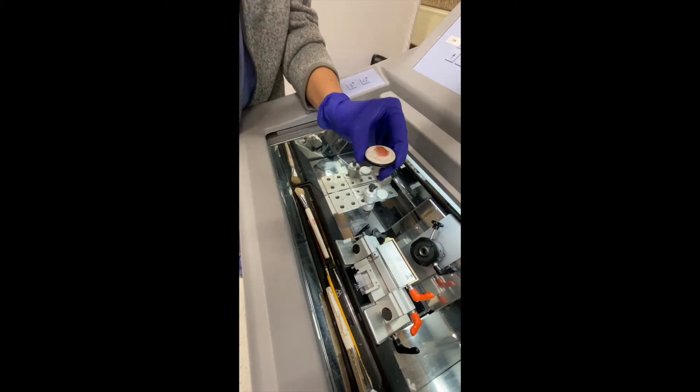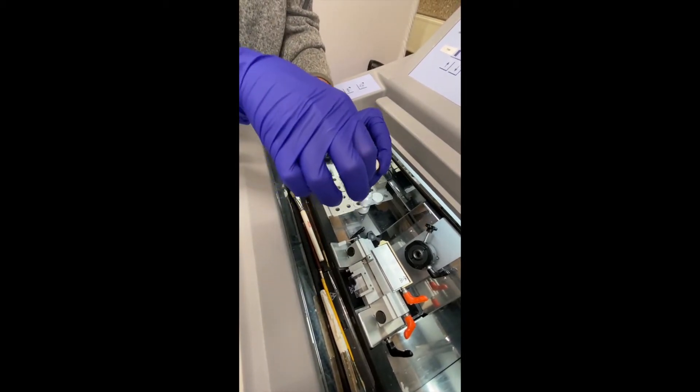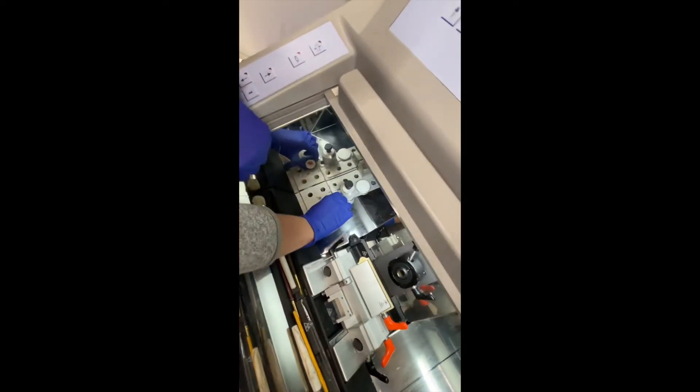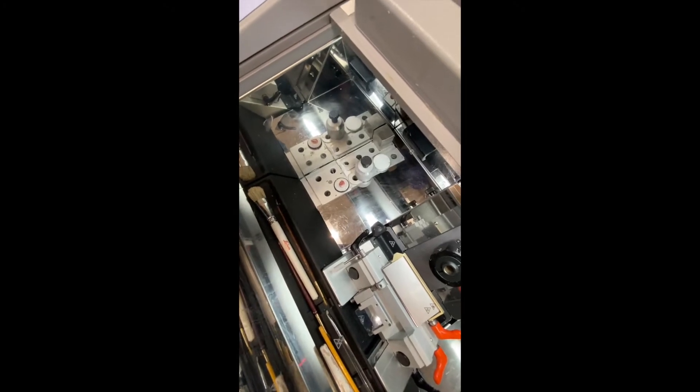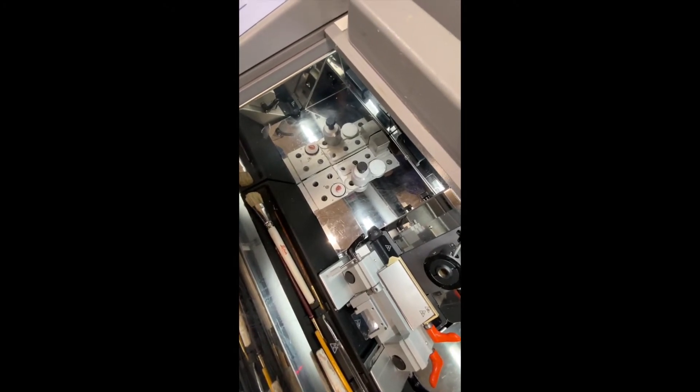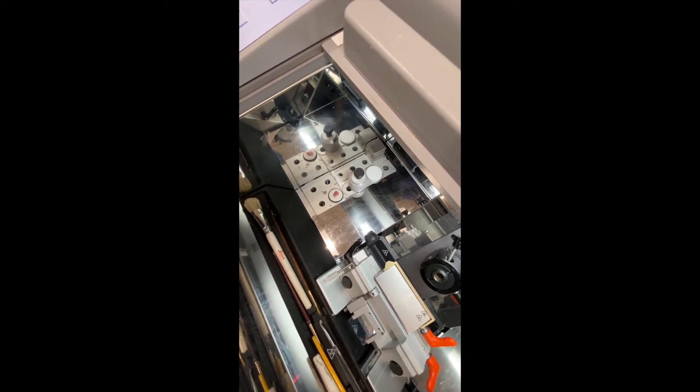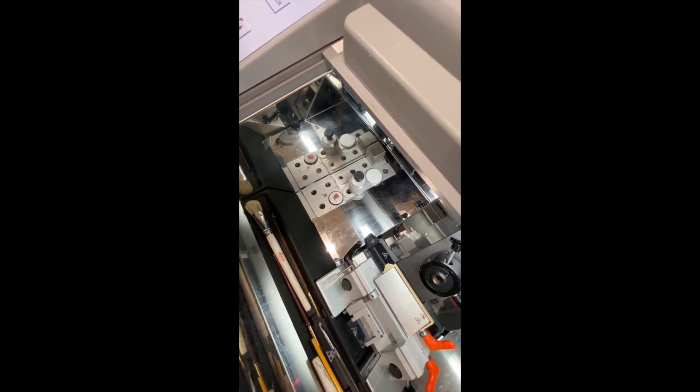Once you place the OCT media over the top of your specimen, you're going to put the specimen back into the cryostat and allow it to freeze. In order for the specimen to freeze quicker than just letting it sit alone, you may use something called a peltier element or a heat sink, which is what we're going to use in this circumstance.